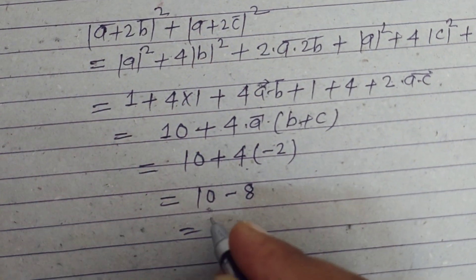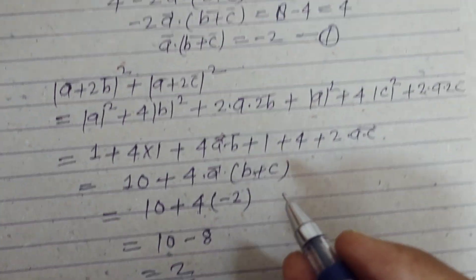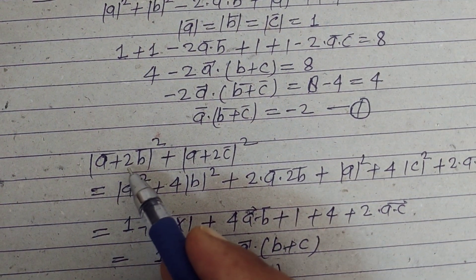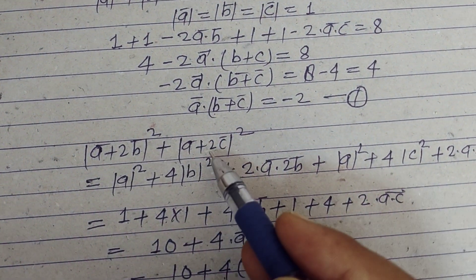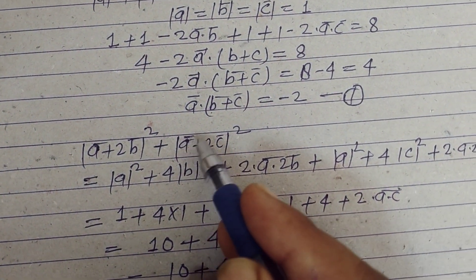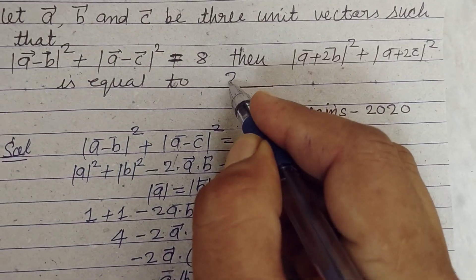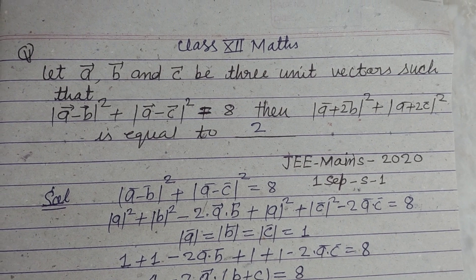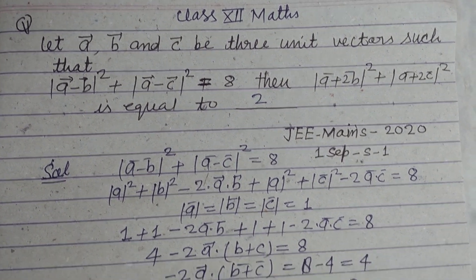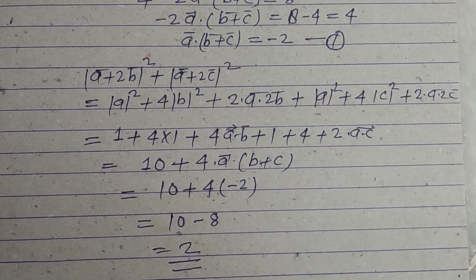So finally, the value of the given a plus 2b mod whole square plus a plus 2c mod whole square is 2. So answer of this question is 2. I hope you got it. Please like the video, subscribe the channel. Thanks for watching.